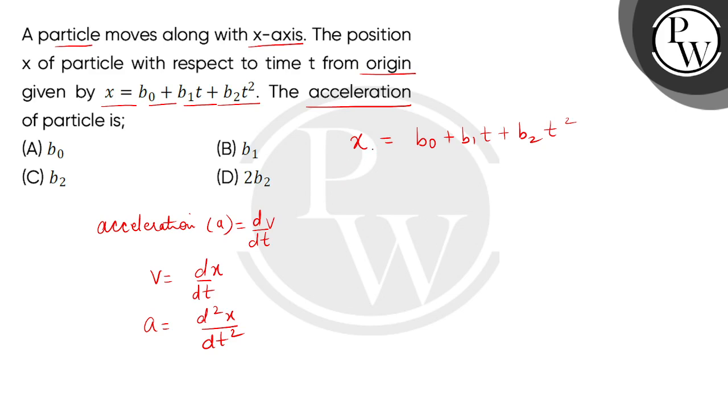So, first of all, we will differentiate both sides with respect to t, then we will get velocity. So, this is d by dt of b0 plus b1t plus b2t squared. The derivative of constant is 0, so derivative of b0 is 0. The derivative of b1t is b1, and the derivative of b2t square is 2b2t.